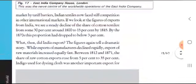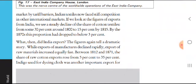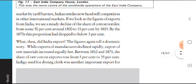Excluded from the British market by tariff barriers, Indian textiles now faced stiff competition in other international markets. The British had their tariff barriers so that Indian textile had to face competition in other countries as well, since British goods were also going there. Indian products had slightly higher costs. If we look at the export figures from India, we see a steady decline: in 1800 it was 30%, in 1815 it was 15%, and in 1817 it was 3% — the cotton export was completely closed.